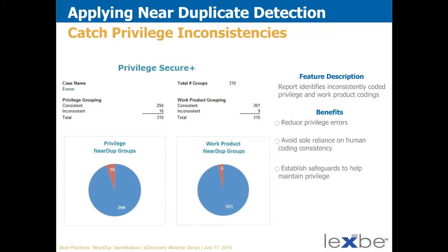Here's another view of how that can be done as a report. This report shows the groupings in the test case and then shows which groupings have inconsistent coding. The computer has gone in, found the groupings, and identified the ones that were inconsistently coded. If they were all privileged or all not privileged it doesn't come up as inconsistent, but if there's some of one and some of the other, that comes up as a red flag for groupings with inconsistent coding. Before the production goes out the door, you can go in and look at those groupings to check that they're done properly.